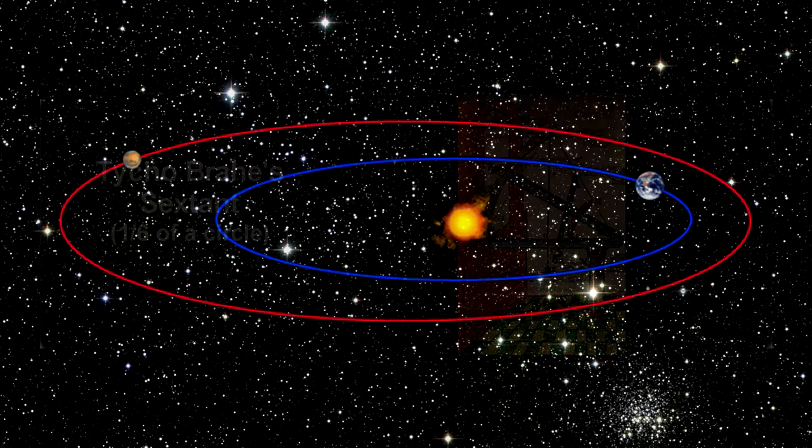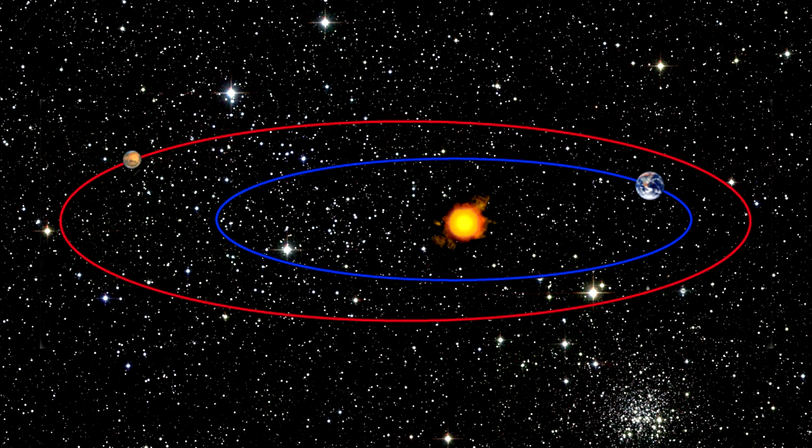Using this information, Kepler found that the orbits of the planets, including the earth, were ellipses.